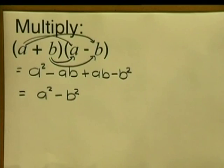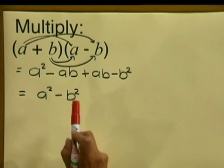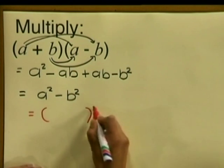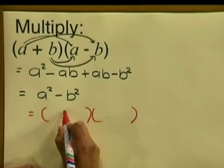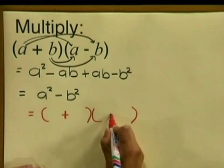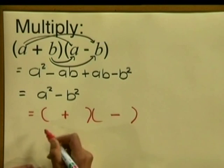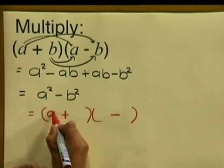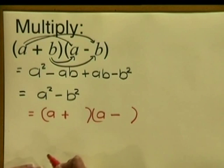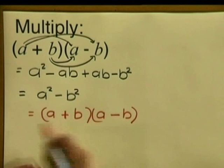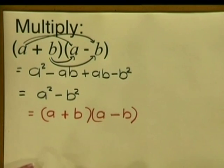Now if we reverse this process of multiplication and factorize a squared minus b squared, all we need to do is take the square root of each term. We start off putting down our two brackets — we know one is going to have a plus sign and one is going to have a minus sign. Then we square root the first term: a squared square rooted gives us a, and that goes in the first place in each bracket. Then we square root b squared and we are left with b. And that is how we factorize a difference of two squares.